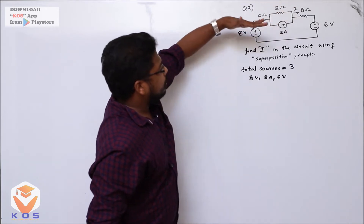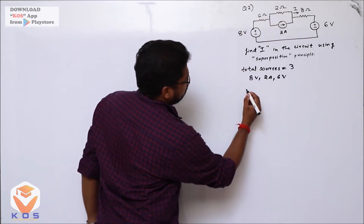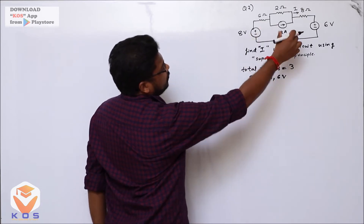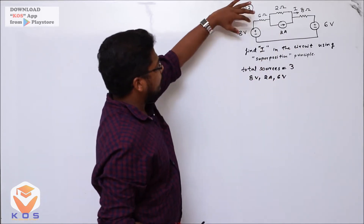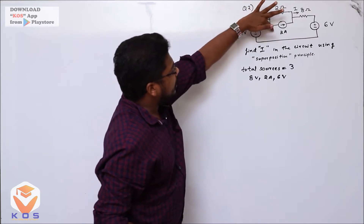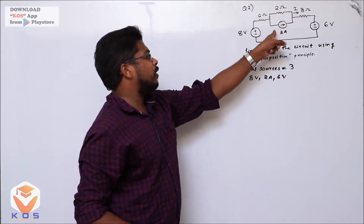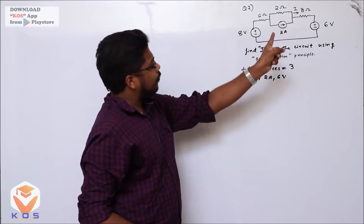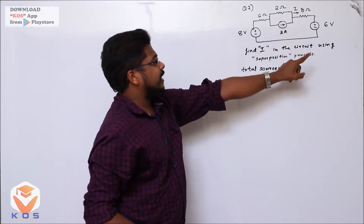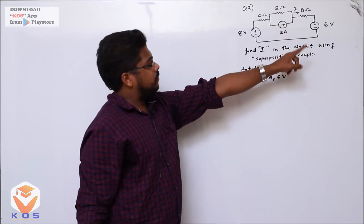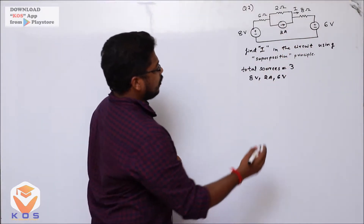With 3 sources, we apply superposition by considering each source separately while turning off the others. For each step, we deactivate the remaining sources: the 8V and 6V voltage sources are replaced with a short circuit, and the 2A current source is replaced with an open circuit.